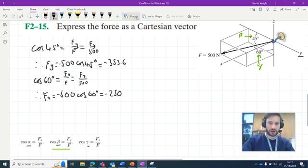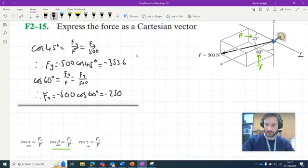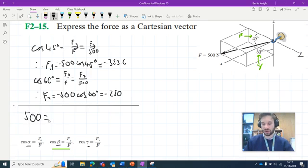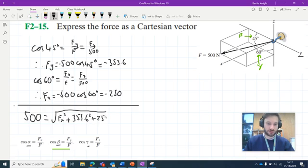We have our y and z components. Let's calculate the x component. We haven't been given alpha, but we can use Pythagoras's theorem. The magnitude of the force, 500, equals the square root of the x component squared plus 353.6 squared plus 250 squared. We have only one unknown, Fx, so we can rearrange for it.